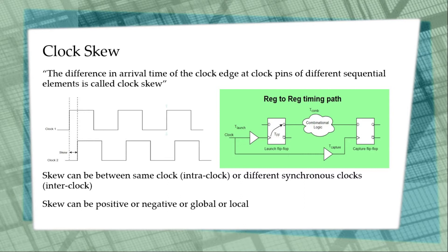Clock skew can be positive or negative. When clock skew is positive, it means the clock is arriving first to the launch flip-flop and is delayed at the capture flip-flop. That is a positive skew. For a negative skew, the clock at the capture flip-flop arrives first and the launch flip-flop clock arrives late. So these are the two types of skew.